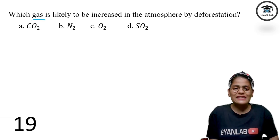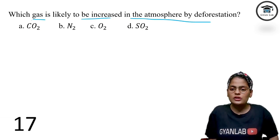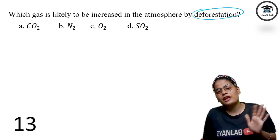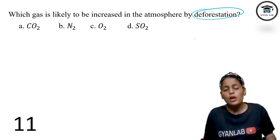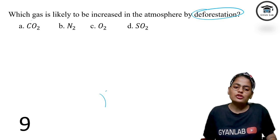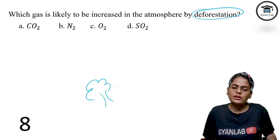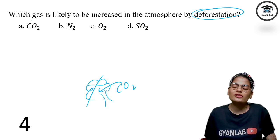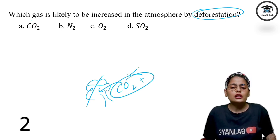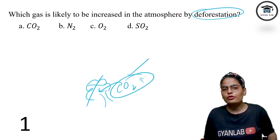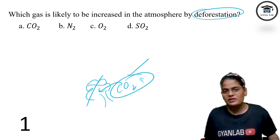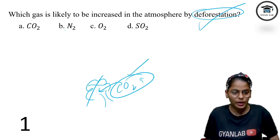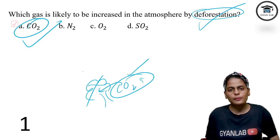Which gas is likely to increase in the atmosphere due to deforestation? If all the trees are cut down, as we studied in global warming in classes 8, 9, and 10, trees absorb CO2. If trees are cut, no plant is there to absorb CO2, and CO2 cannot escape the atmosphere either. Therefore, CO2 concentration will increase in the atmosphere.